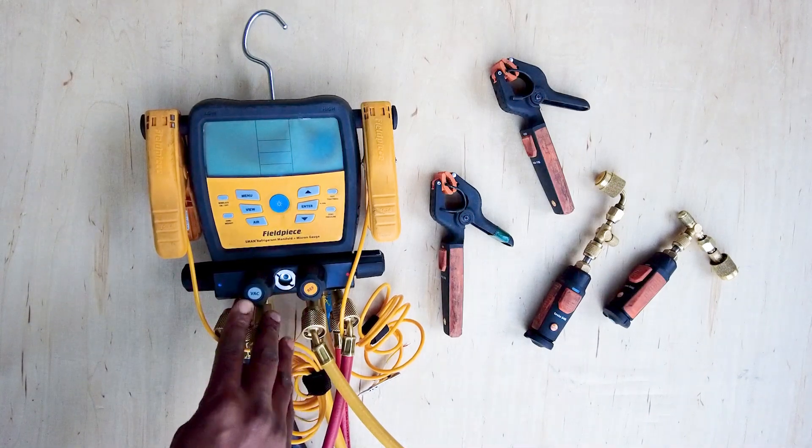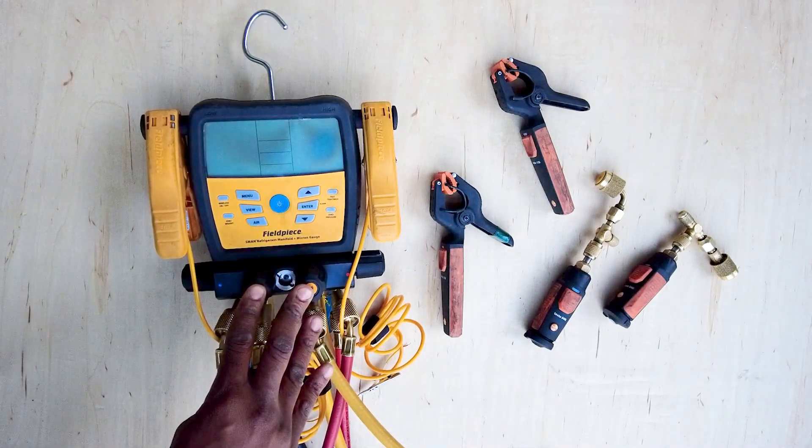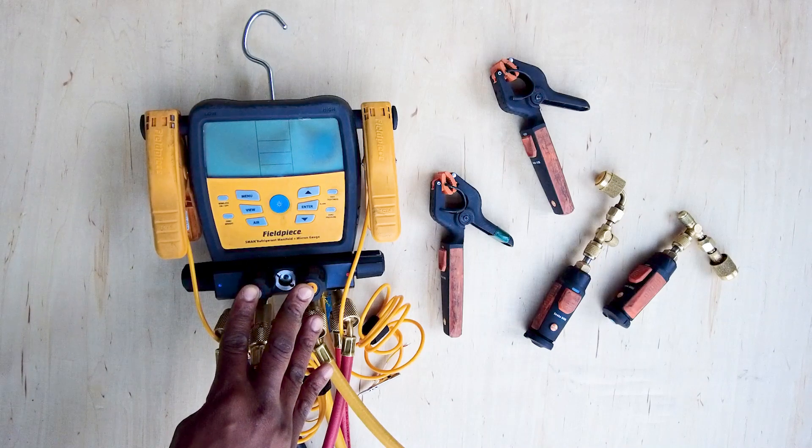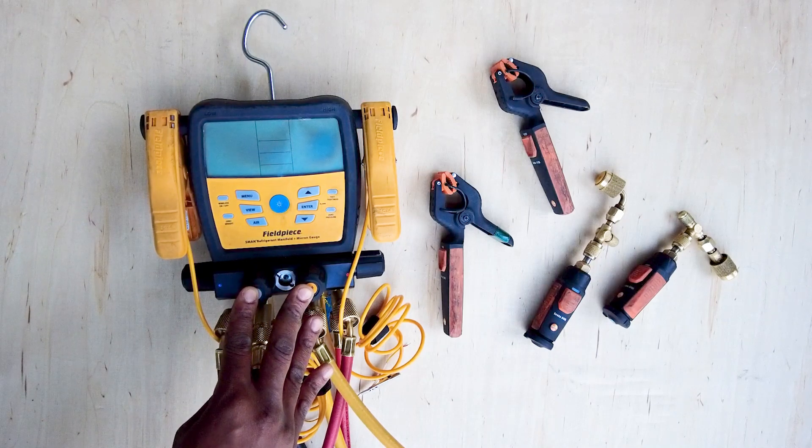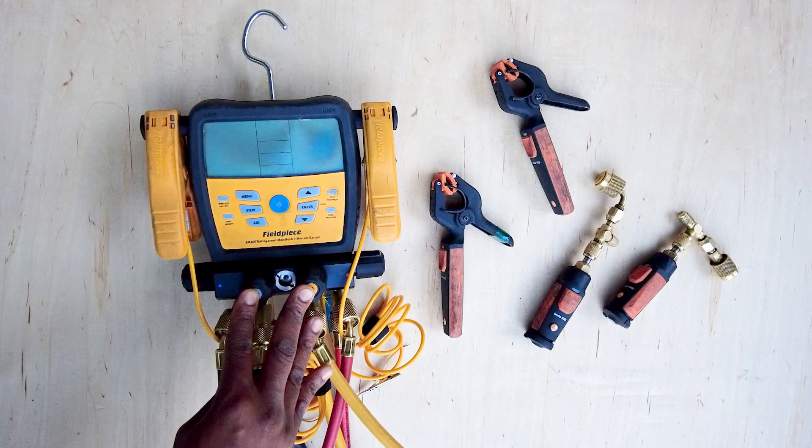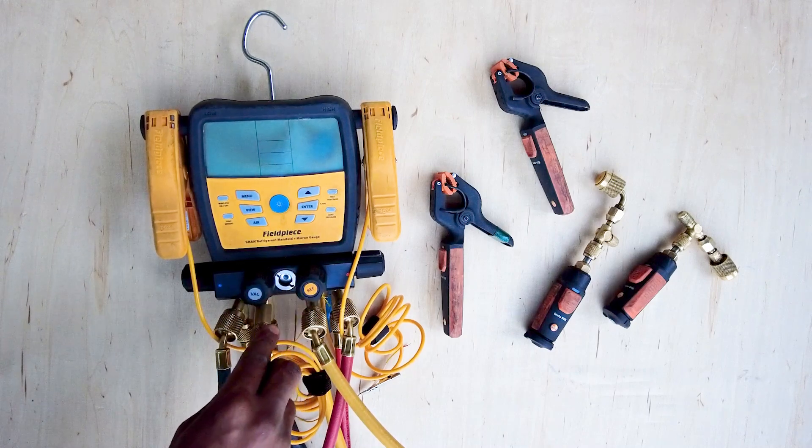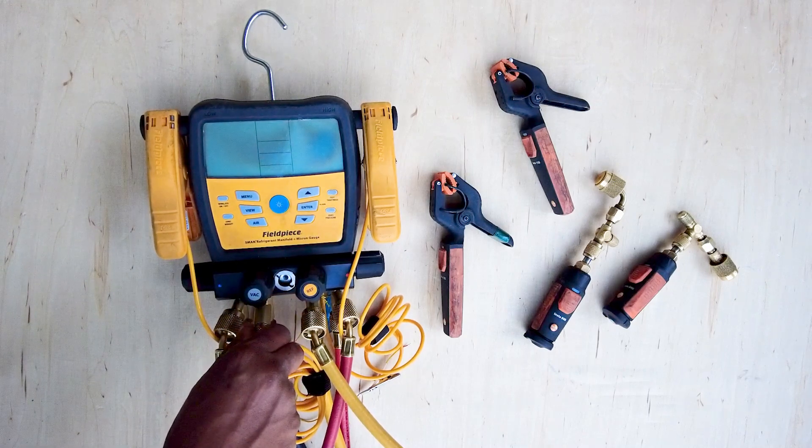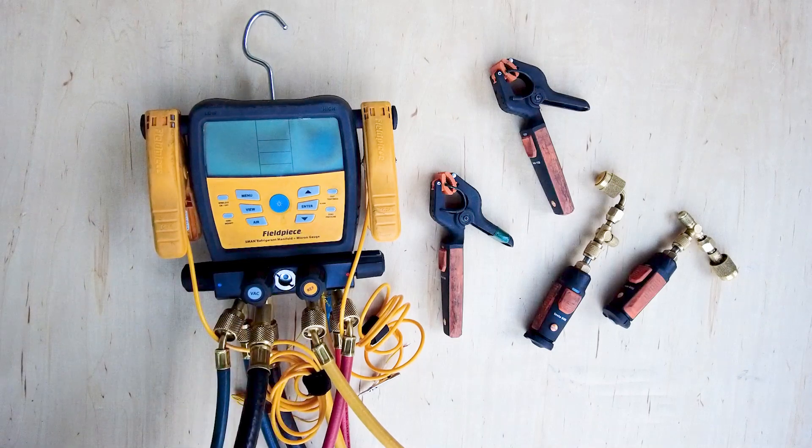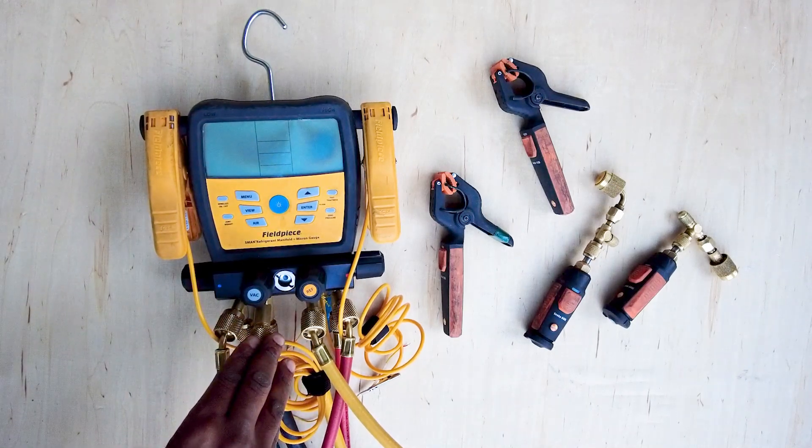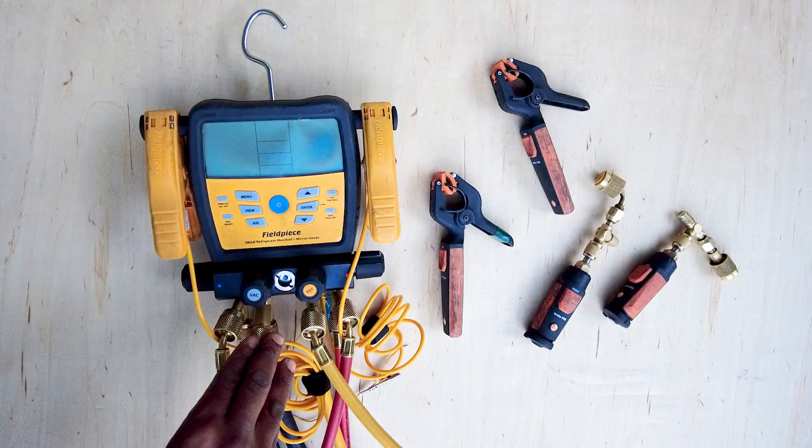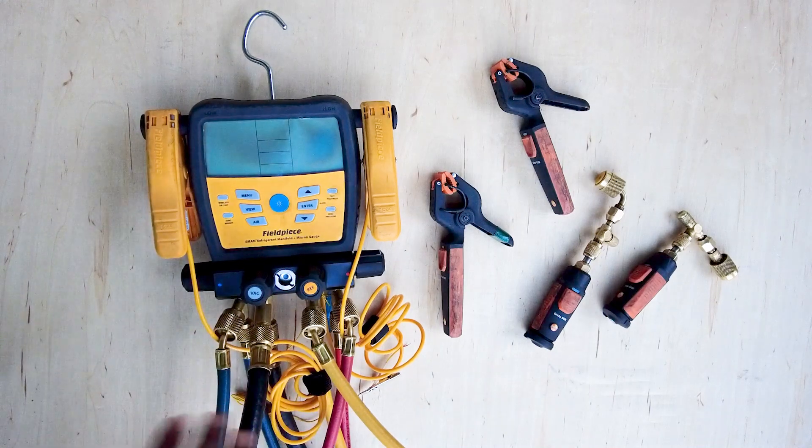So yeah, this 300-foot, 350-foot range on these S-mans is super powerful, especially when you're trying to diagnose complex issues on the refrigerant side of a system. They just really make a difference, make your life a lot more simple and just more convenient when trying to diagnose issues.